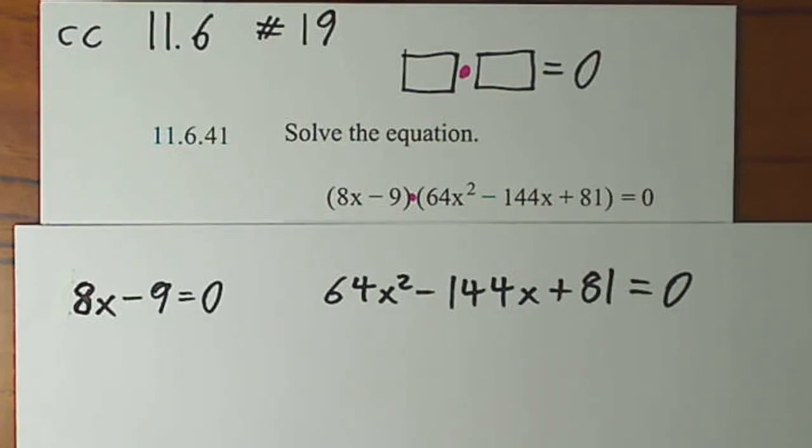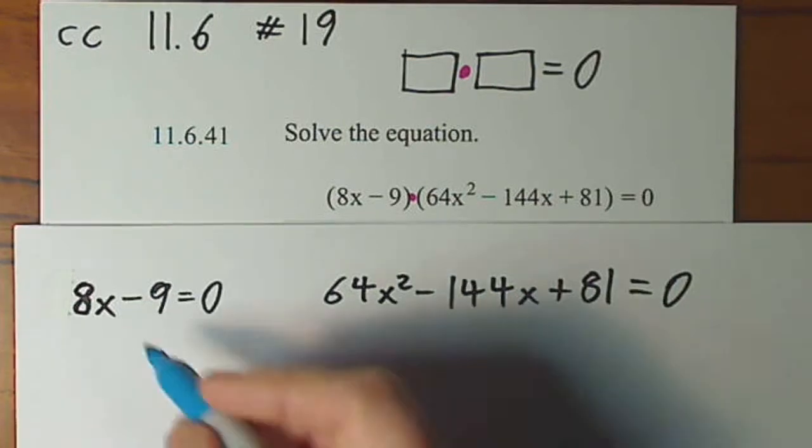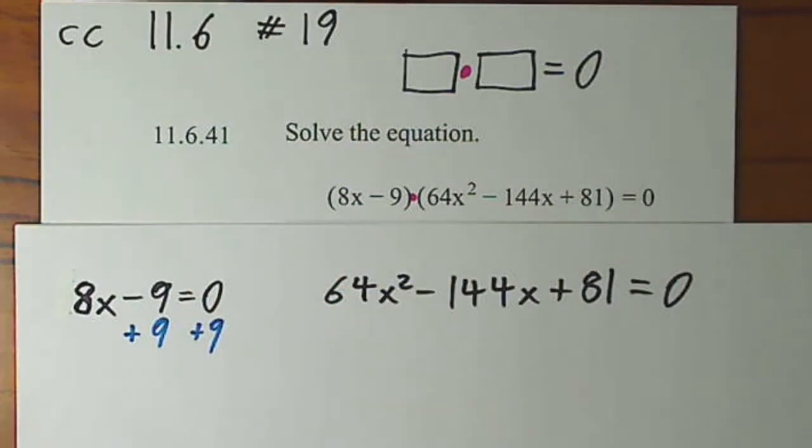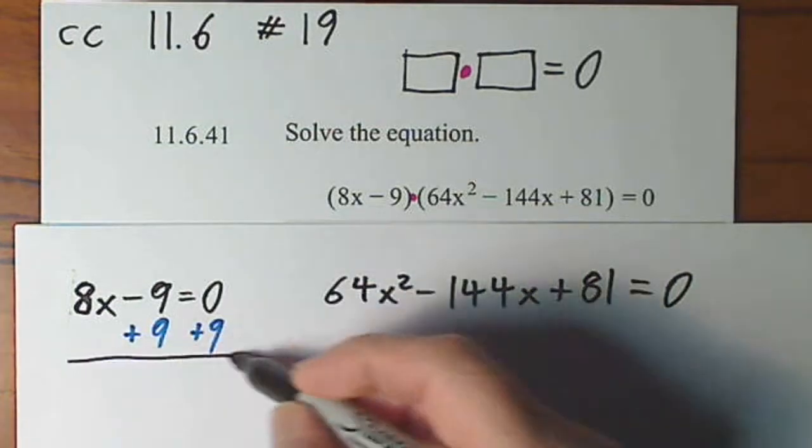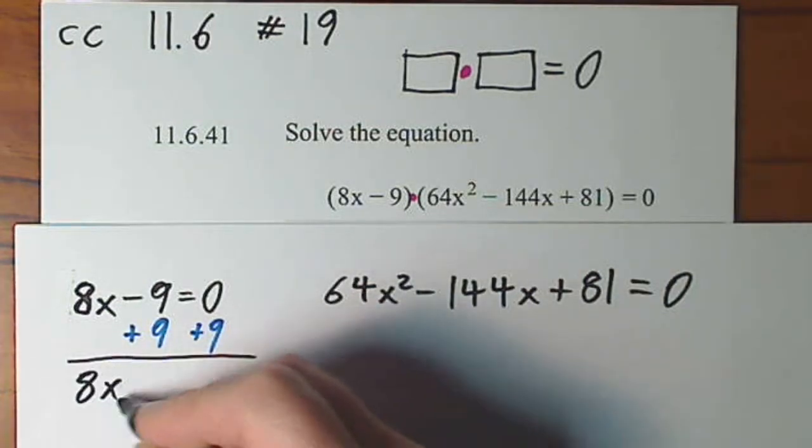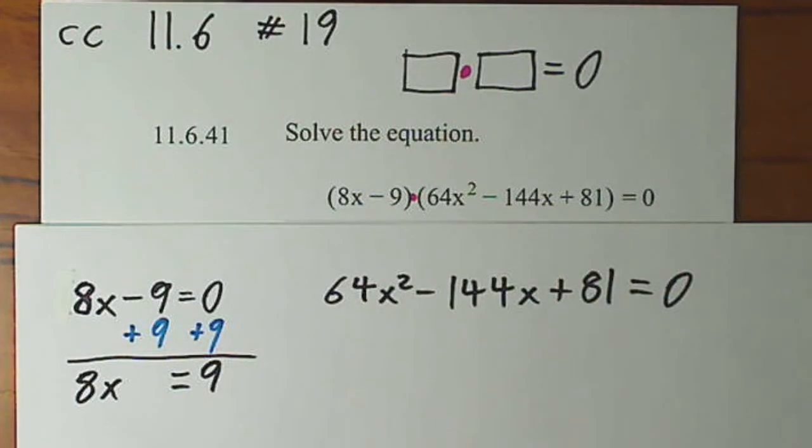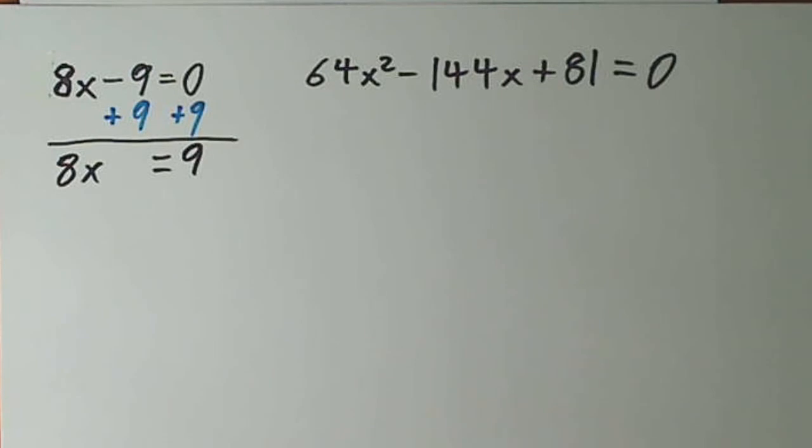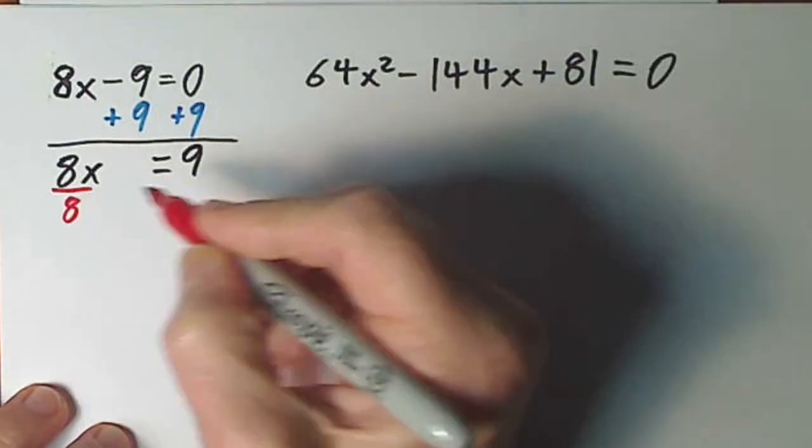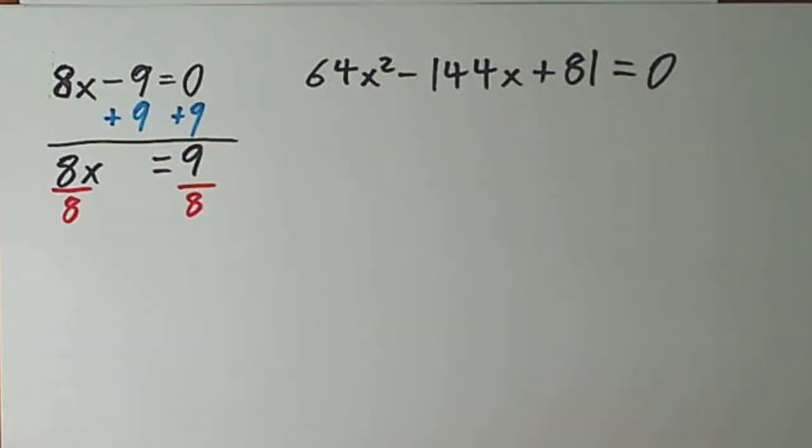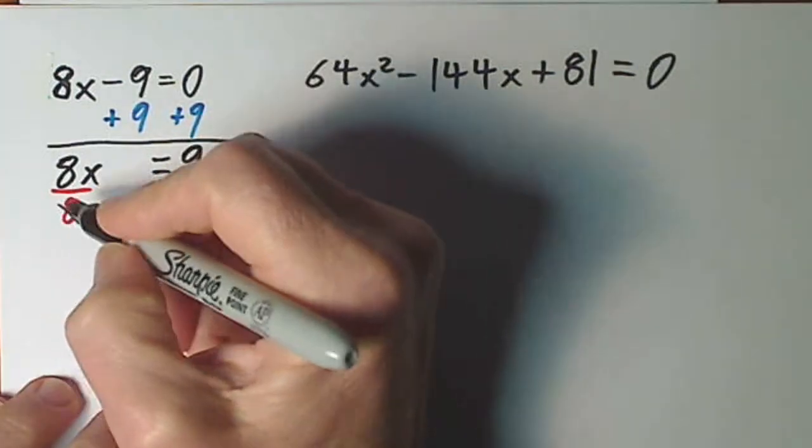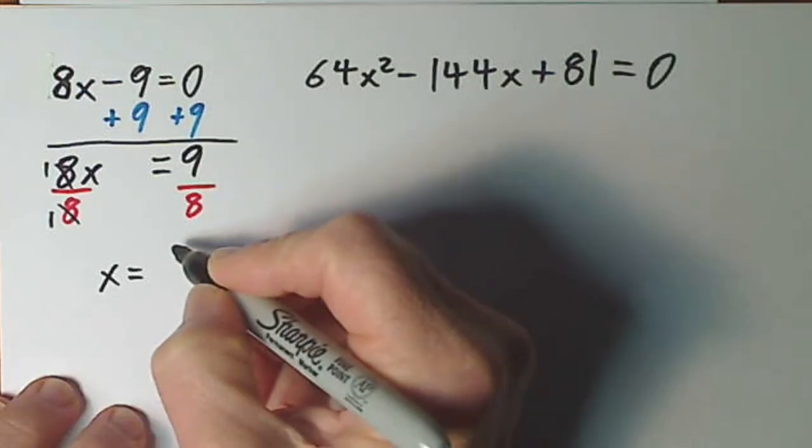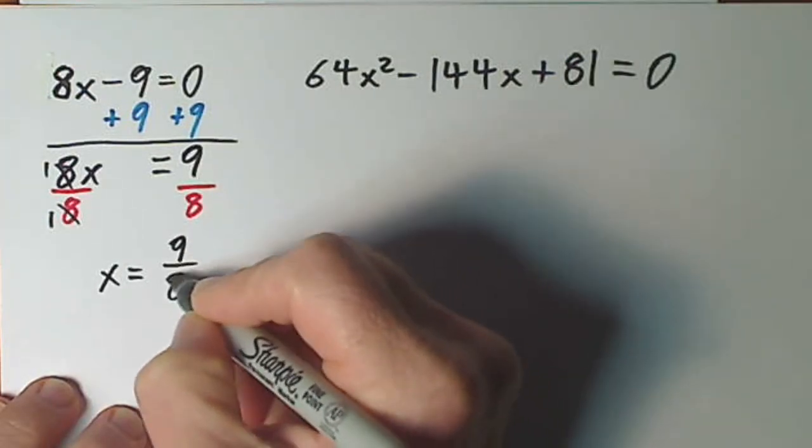All right, the first one won't be very difficult to solve. Simply add 9 to each side. When you do that, you're left with 8x equals 9. I've got to slide this up. One more step. Divide by 8. Divide by 8. And this always works nicely. 8 goes into 8 once, so x equals 9 eighths.